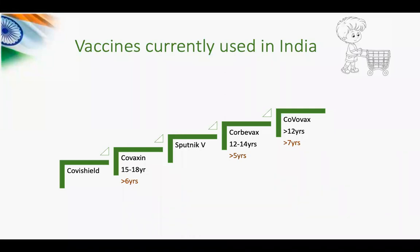As of July 2022, five vaccines are available in India. Covaxin can be given for children between 15 to 18 years of age. Corbivax can be given for those between 12 to 14 years. Covovax is available in the private sector for everyone above 12 years. DCGI has given the green signal for vaccines for children less than 12 years, but the National Technical Advisory Group on Immunization has not yet approved it, so currently no vaccines are being given to children less than 12 years in India.